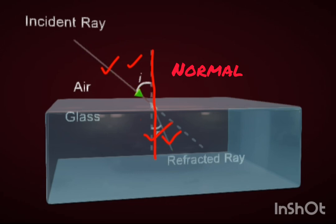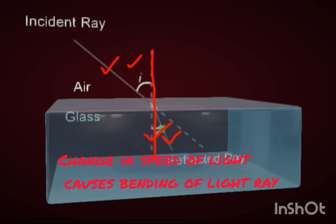Now, what causes refraction of light? We know that the speed of light is different in different media. So, the refraction of light is due to the change in the speed of light on going from one medium to another.